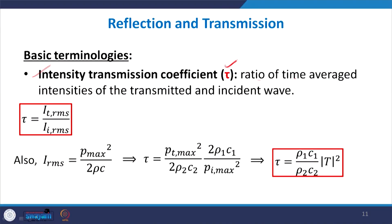The intensity transmission coefficient τ is the ratio of the time-averaged intensity of the transmitted wave to the incident wave: τ = I_t,rms / I_i,rms. Since the transmitted wave is in the second fluid medium and the incident wave is in the first, we use different ρ and c values: I_t,rms = P_t,max² / 2ρ₂c₂ and I_i,rms = P_i,max² / 2ρ₁c₁. So τ equals (P_t,max / P_i,max)² times (ρ₁c₁ / ρ₂c₂), which is T² times (ρ₁c₁ / ρ₂c₂).